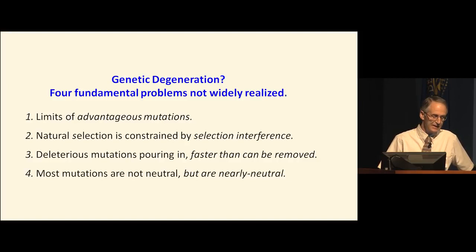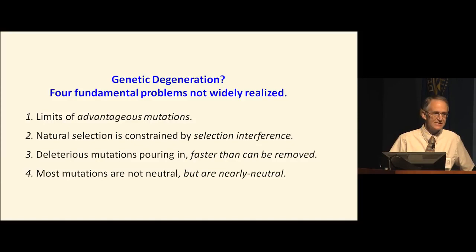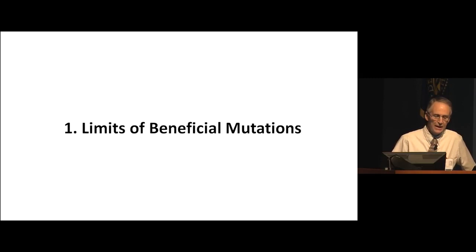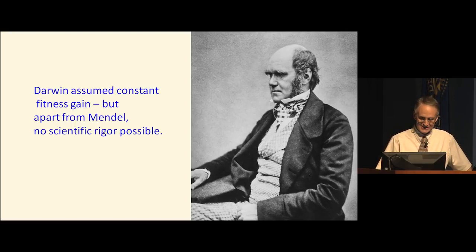The third problem is that deleterious mutations are pouring into our population much faster than they can be selectively removed. And lastly, most mutations are not neutral — although that's the common conception — most mutations are nearly neutral, and that totally changes the implication. So let's start by talking about the limits of beneficial mutations. Darwin believed that fitness would increase continuously through natural selection, but he didn't know what natural selection was acting on. He didn't know about genetics, Mendel, or mutations.